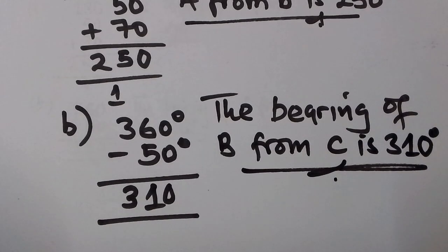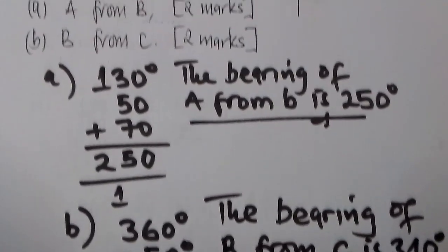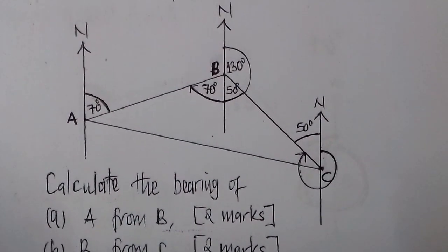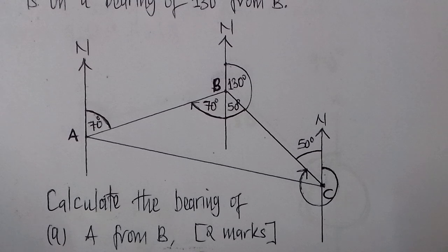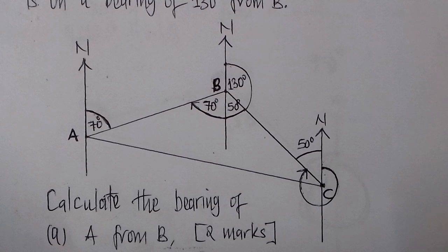This diagram is what we used to get the bearings. Bearings are easy to work out when you use the concept of angles associated with straight lines, because you can identify alternate angles, corresponding angles, and allied angles. Though we have not used corresponding angles and allied angles here, it is easy to work with these straight lines when it comes to bearings. That is my solution for this question.